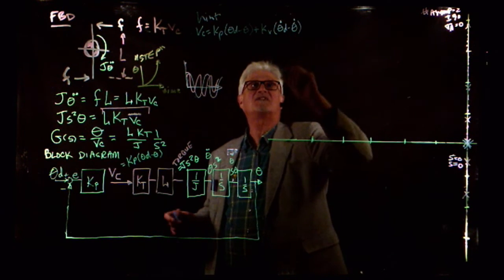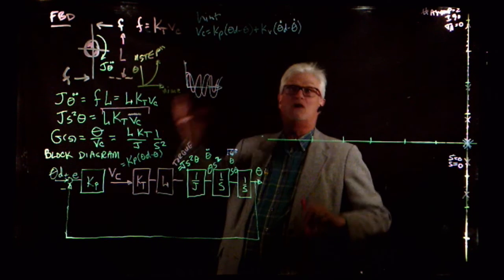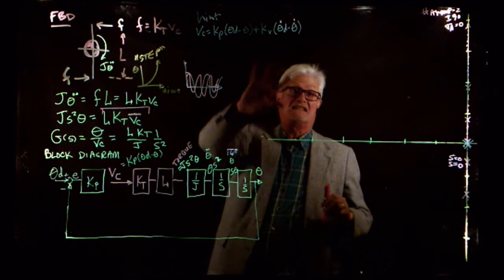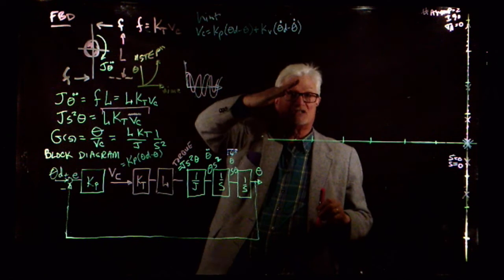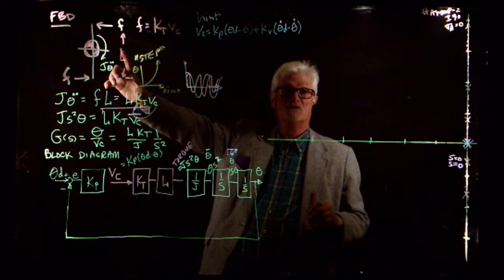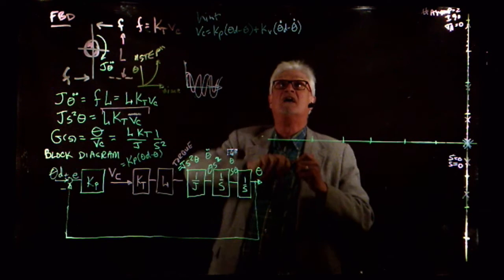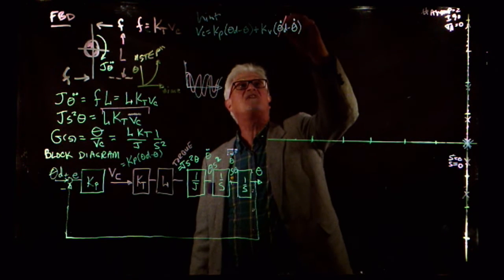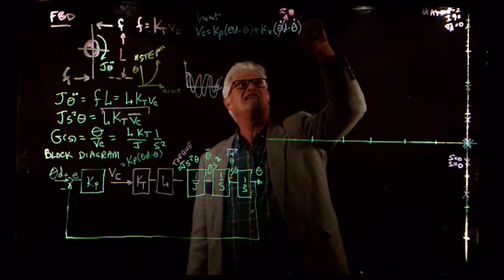It turns out we don't necessarily know what velocity we want this thing to move at. We might know that we want to point our satellite to a specific angle, pointing at Mars or the Moon. But we don't know what the velocity is, so I'll just set theta_dot_desired equal to zero.